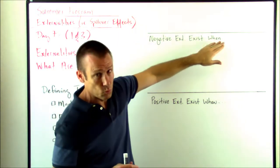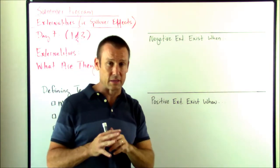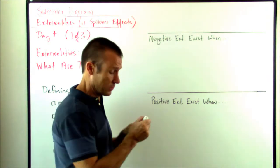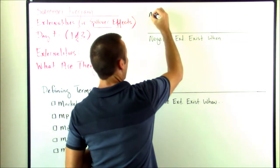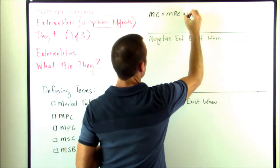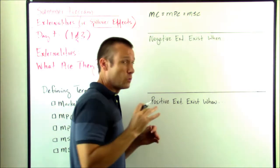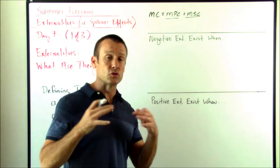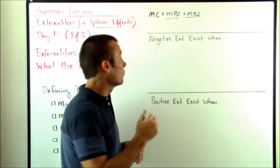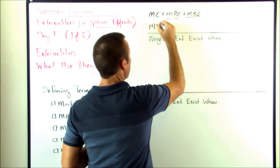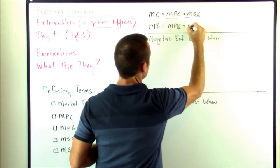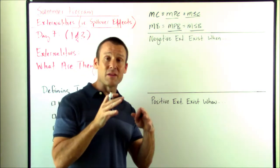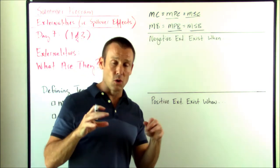When do negative externalities exist? Up until this point, we have assumed that marginal cost equals marginal private cost equals marginal social cost — which means no externalities. If marginal private cost and marginal social cost are the same, there are no spillover effects. Similarly, we have been assuming that marginal benefit equals marginal private benefit equals marginal social benefit — no externalities. If marginal private benefit equals marginal social benefit, there are no externalities.